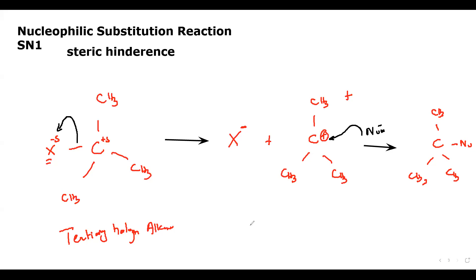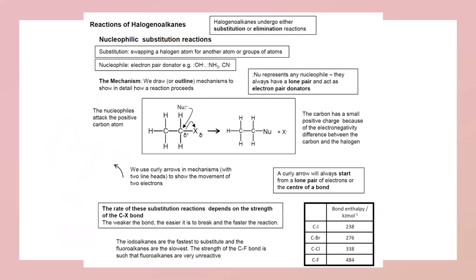This is the general mechanism. As we discuss reactions related to halogenoalkanes, we will look at what specifically happens in different types of reactions. Halogenoalkanes undergo substitution reactions, and there are two ways the reaction can occur: either substitution or elimination. We will focus first on substitution — the nucleophilic substitution reaction.